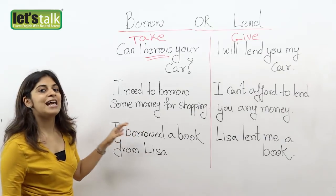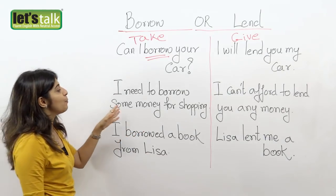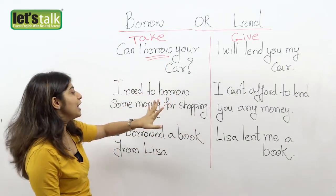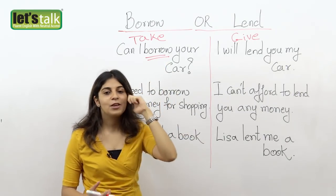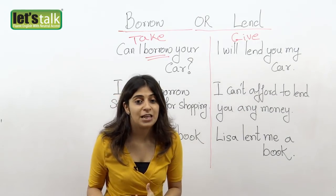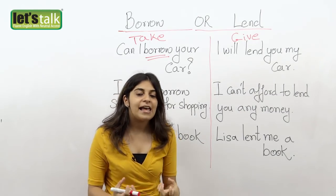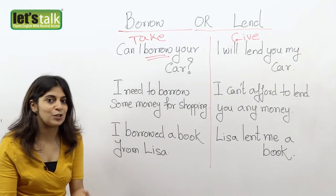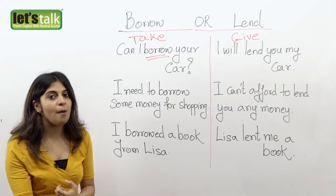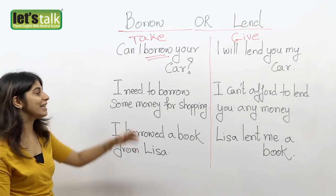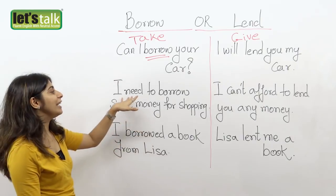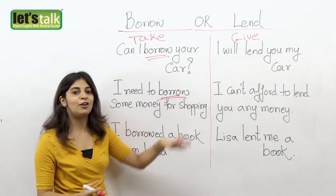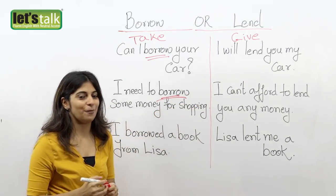Now we have another sentence: "I need to borrow some money for shopping." Here you borrowed your mom's car, and now you need some money. Maybe you've spent all your salary and you don't have any money for shopping. So again you would borrow it from your mom — you would take it. You're going to ask your mom for some money, so that's when you would use: "I need to borrow some money for shopping." Borrow here means that you're taking money from her.